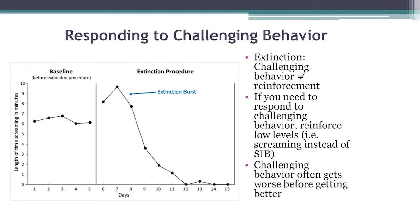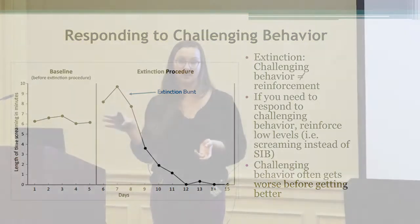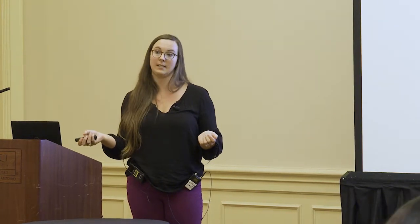So how do we respond to challenging behavior? All of those interventions I just talked about are preventative or antecedent interventions. So what is the consequence if a challenging behavior does occur? One thing that we use is called extinction. Extinction just means that if an individual engages in challenging behavior, we're not reinforcing that challenging behavior — and it depends on the function. If they're wanting attention, you don't provide attention to that behavior. If they want access to an item or activity, they don't get access. And if they want to escape from work, they don't get escape if they're engaging in the challenging behavior.